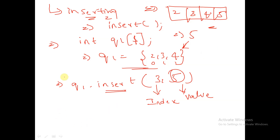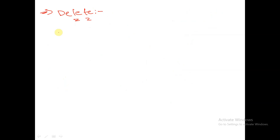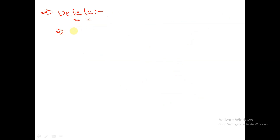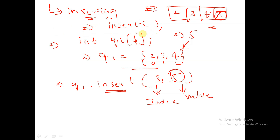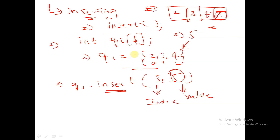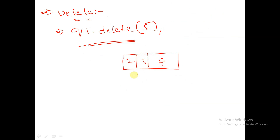Similarly, I also have a delete function. For deleting any element from the queue, in this example I want to delete 5 from this queue. I have a delete function and I will write q1.delete 5. The updated queue will be equal to 2, 3, 4. Here in this case the queue is automatically shrinking itself. The queue can automatically grow and shrink.